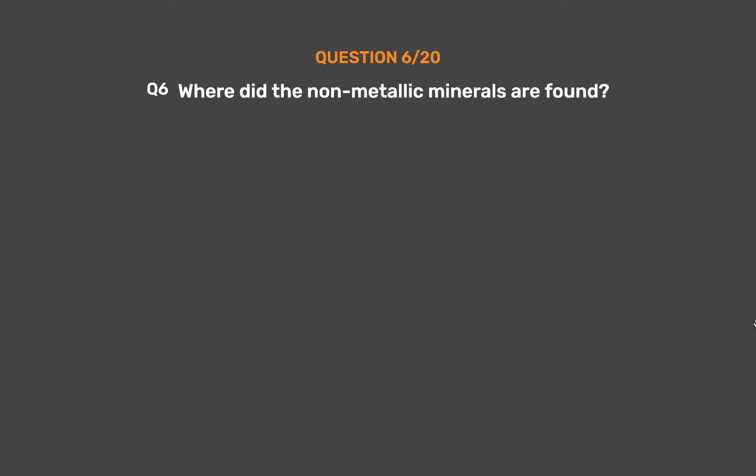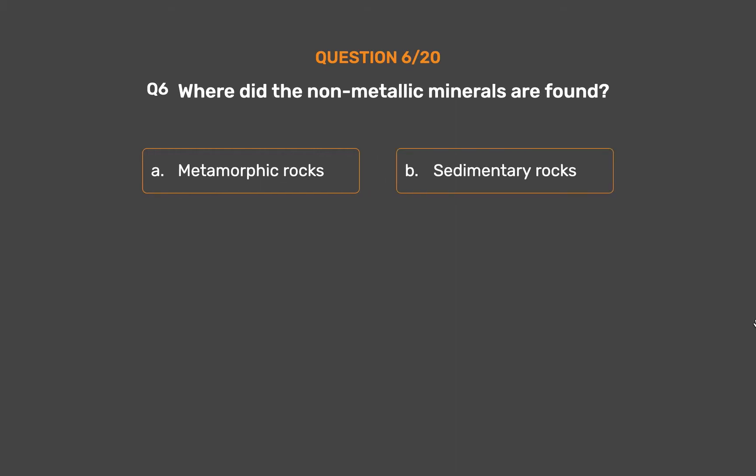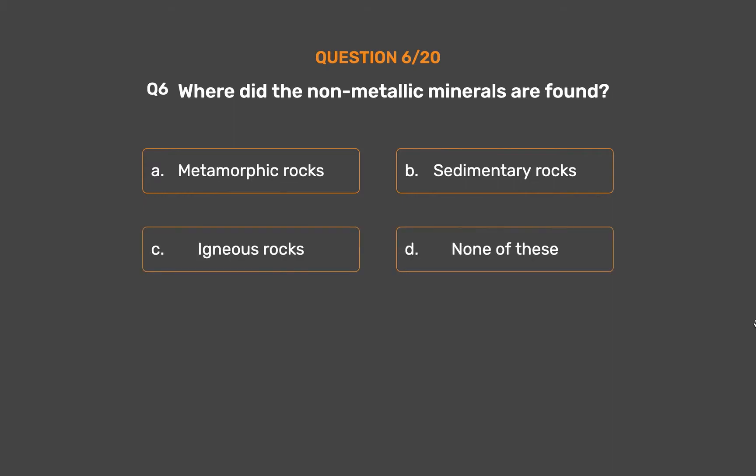Question 6: Where are non-metallic minerals found? Option A: Metamorphic rocks. Option B: Sedimentary rocks. Option C: Igneous rocks. Option D: None of these.